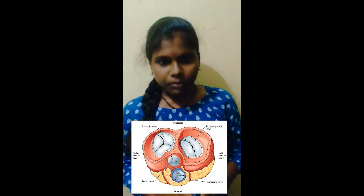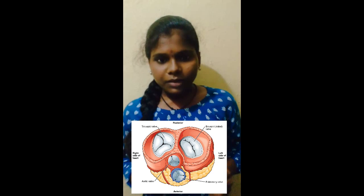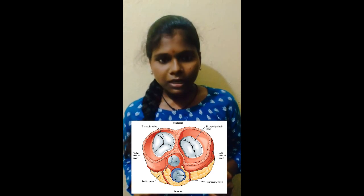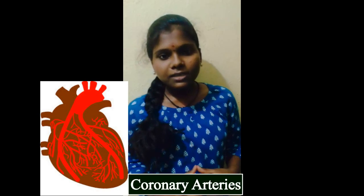The right atrium and right ventricle are connected by the tricuspid valve. The left atrium and left ventricle are connected by the bicuspid valve. Blood from the anterior parts of the body is collected by the superior vena cava, and blood from the posterior parts of the body is collected by the inferior vena cava. The coronary arteries supply blood to the muscles of the heart.